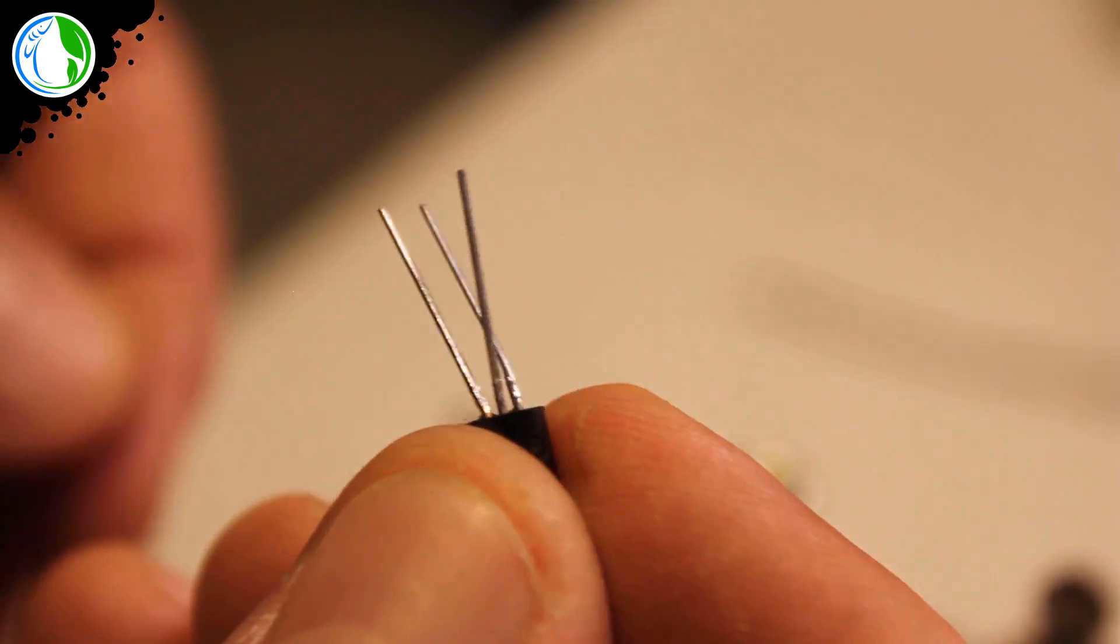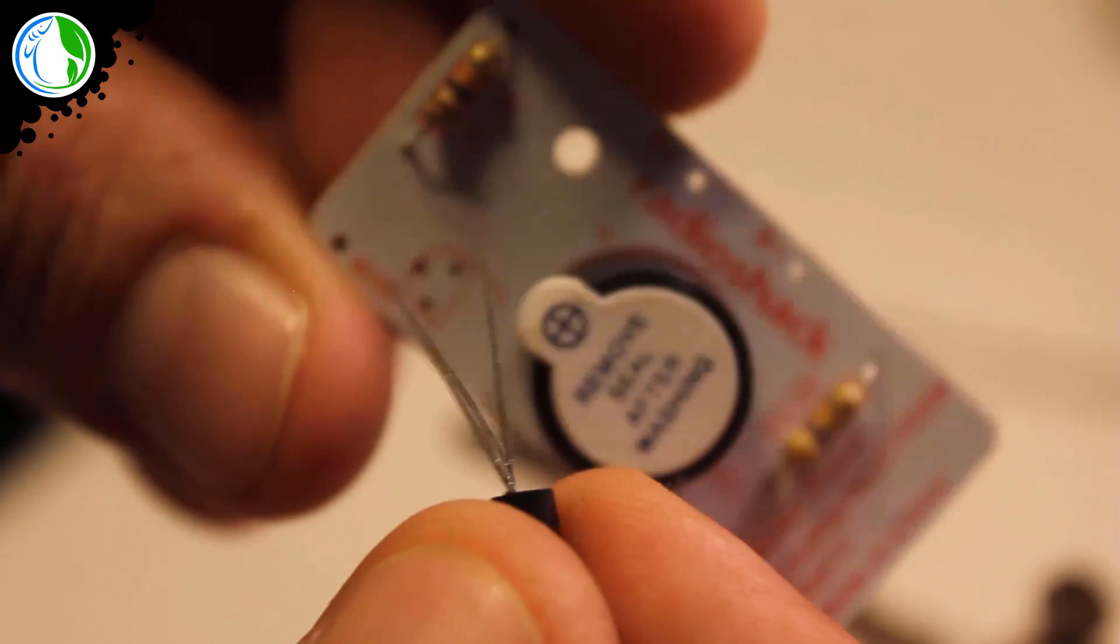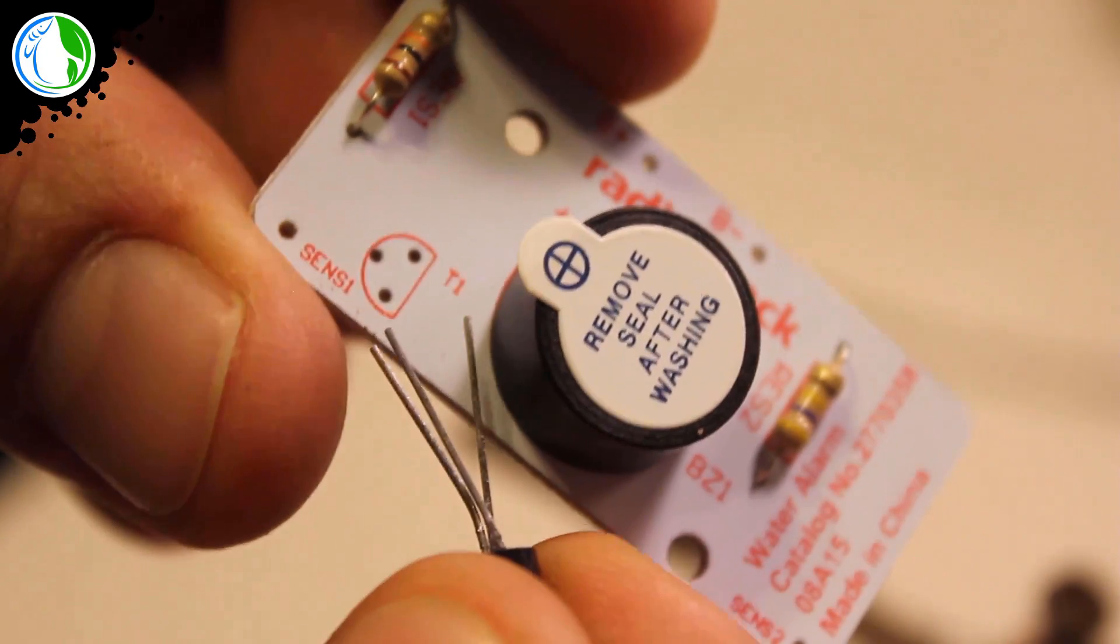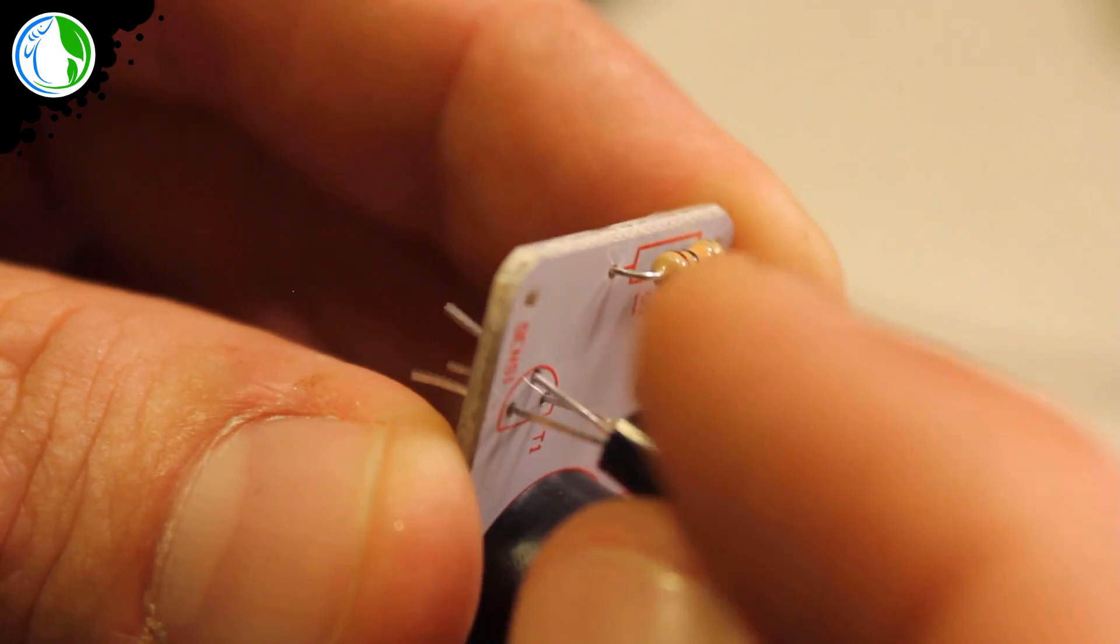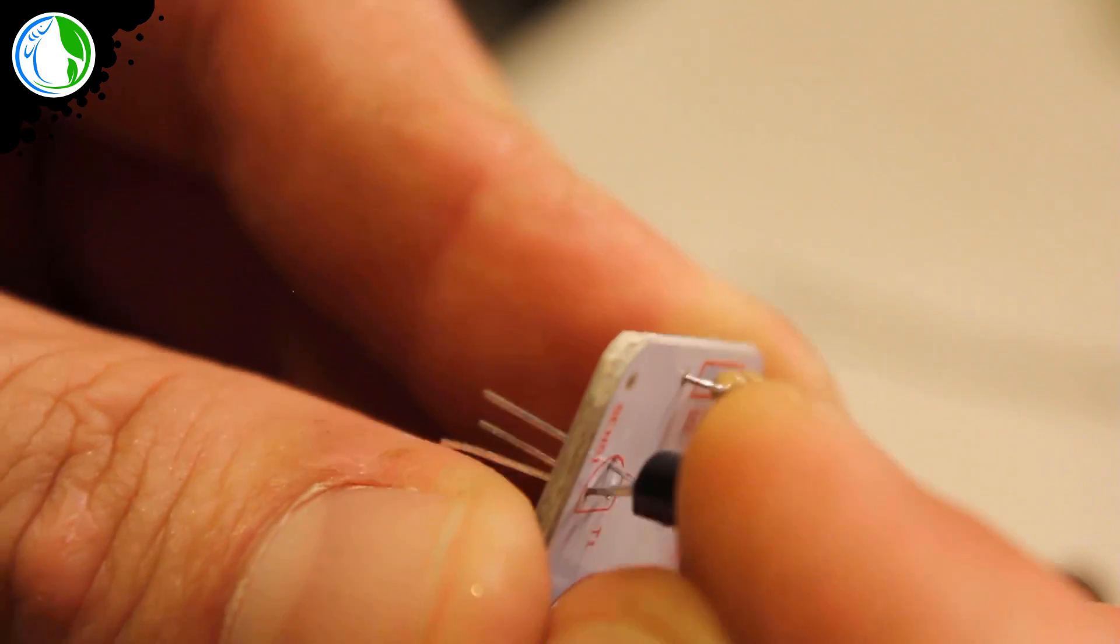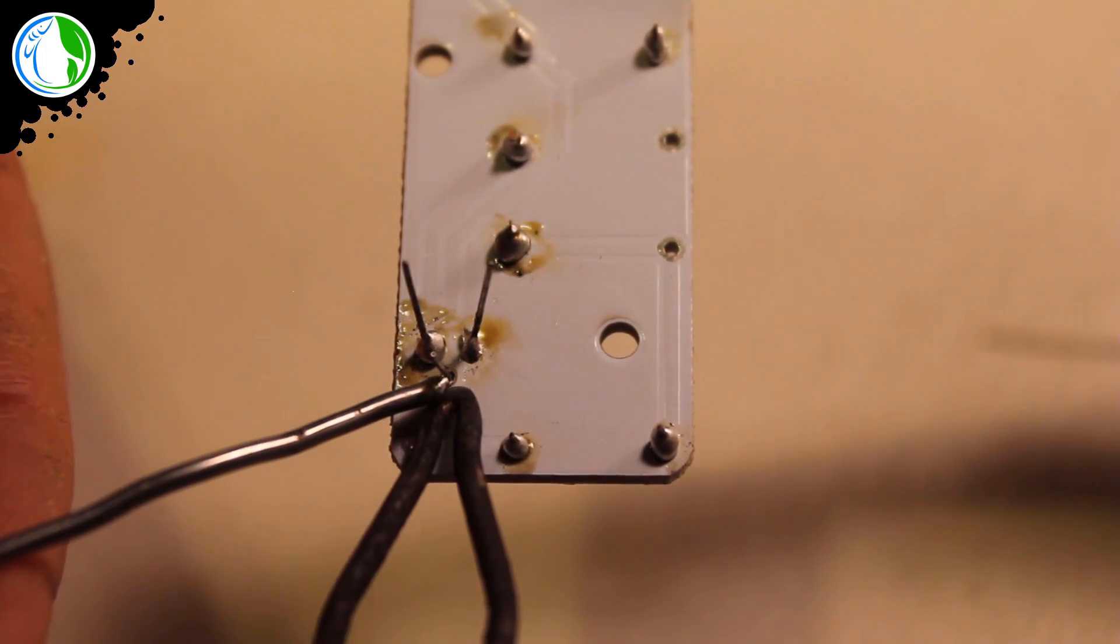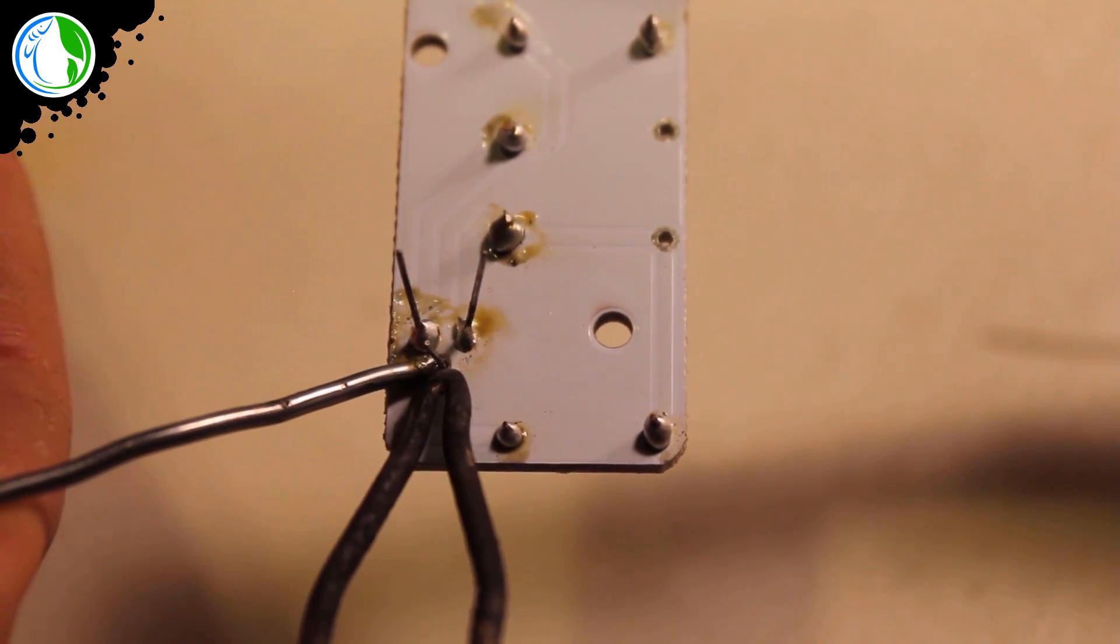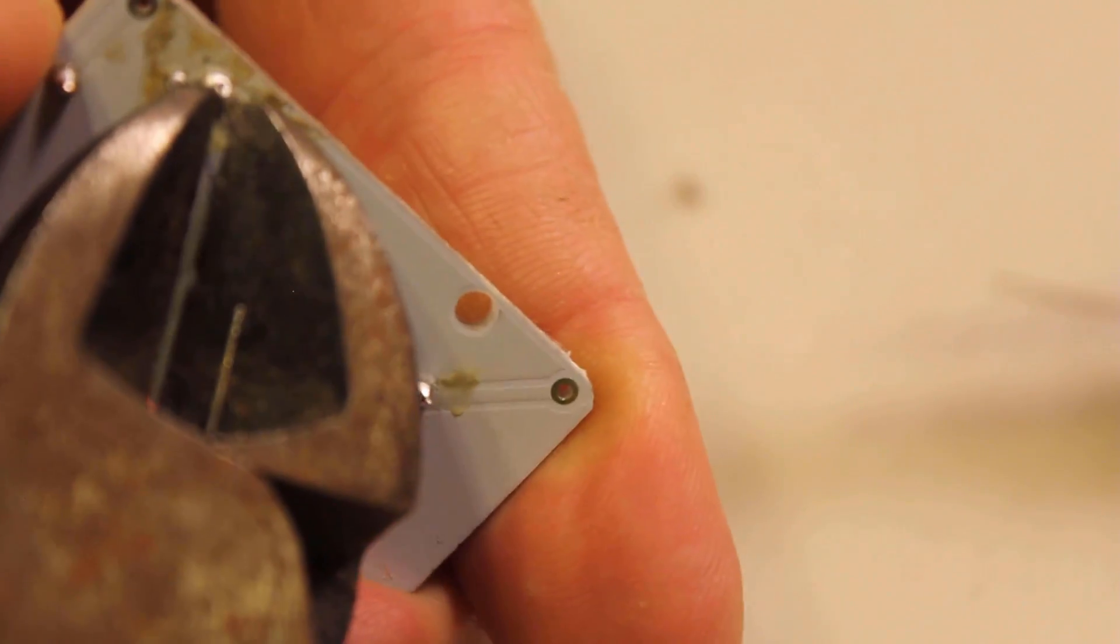I'm going to go ahead and prepare the transistor by bending the middle pin forward and the outer pins back just a little bit. Be gentle when inserting the transistor into the circuit board. You can break off the pins. I'm going to go ahead and solder and clip off the excess pins of the transistor just like the others.